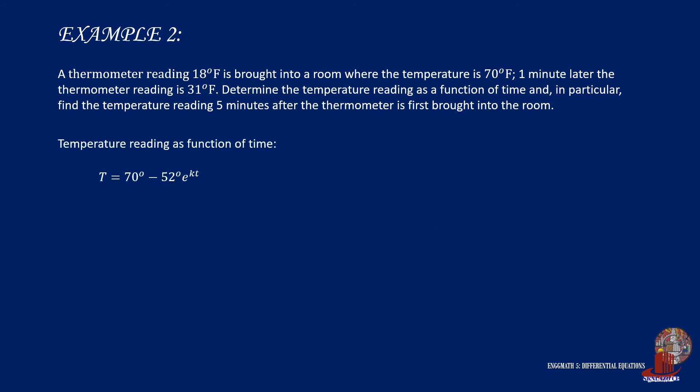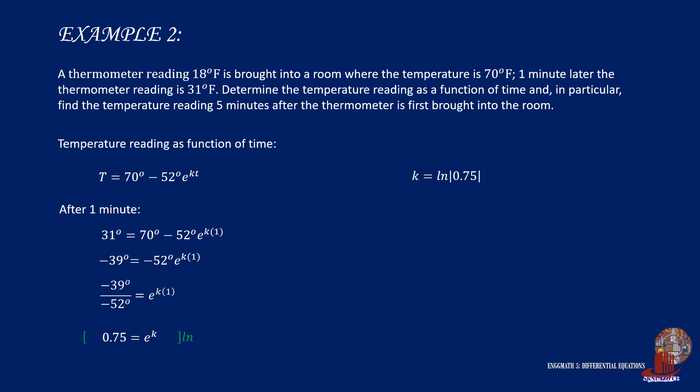Now, take the other situation which is taken after a minute of exposure, giving 31 degrees. So 31 degrees less 70 degrees will be negative 39 degrees, and this is equated to negative 52 degrees times E raised to K times 1. Then take negative 52 degrees to the other side to get 0.75 is equal to E raised to K. With E still in the equation, multiply everything by ln to cancel out E, so K is ln of 0.75, which is taken as negative 0.287682. Thus, the complete particular equation of the temperature reading as a function of time is T is equal to 70 degrees less 52 degrees times E raised to negative 0.287682 times t.